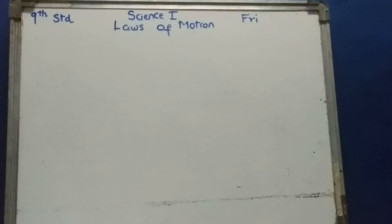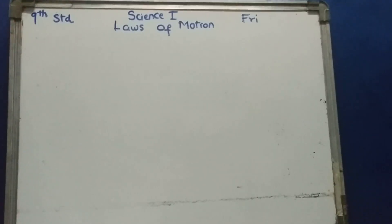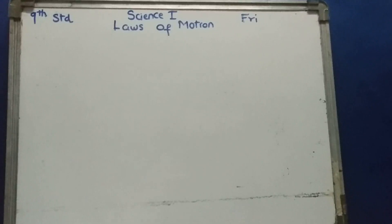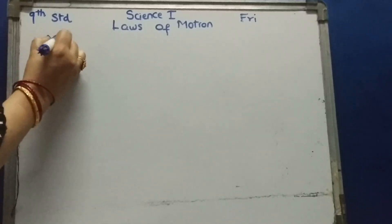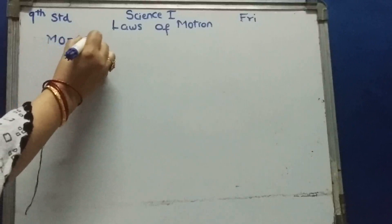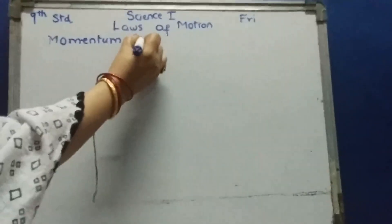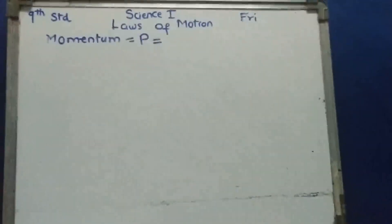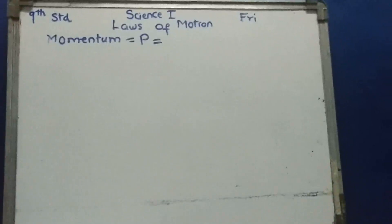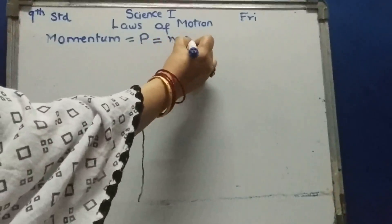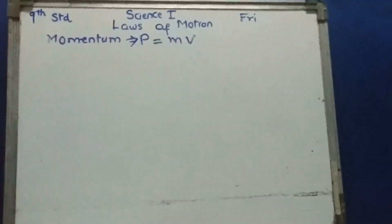Now, what is momentum? The rate of change of momentum is proportional to the applied force, and the change of momentum occurs in the direction of the force. Momentum is denoted by capital letter P, and it is nothing but the product of mass and velocity of the object.